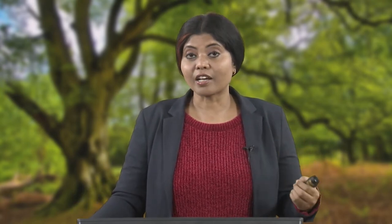When we assess the impact on soil, we look at the hardcore characteristics — soil contamination, erosion, compaction, sealing, and cumulative removal of organic matter. The difference is: when studying land you are looking at the kind of land use and how other uses are coming in, whereas when looking at soil you are looking at the characteristics involved and the quality of those characteristics.